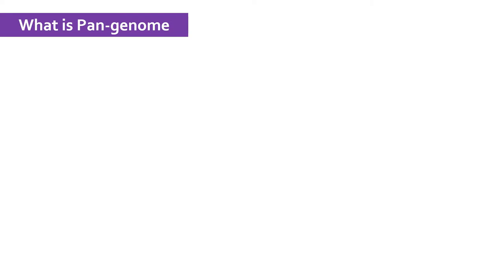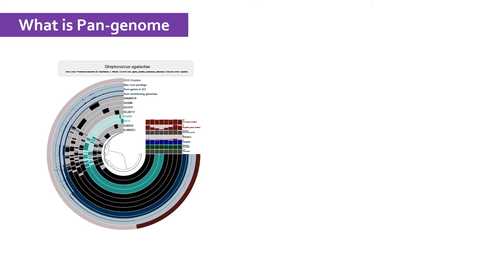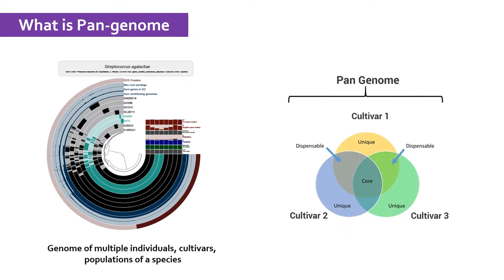Pan Genome is actually the genomes of multiple individuals, strains or populations. Thus, a Pan Genome represents the entire set of genes within a species. The Pan Genome comprises of a core genome which consists of genomic regions or sequences that are conserved throughout the individuals or groups of that species. The remaining portion which is not conserved and shows a lot of variation is termed as Dispensable Genome.